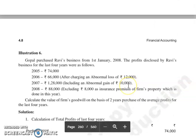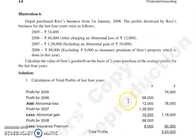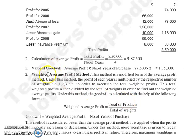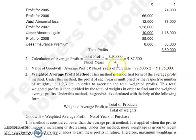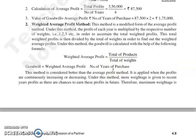Average profit is 3,50,000 divided by 4, which is 87,500. Goodwill here is 2 years of purchase. Value of goodwill is equal to average profit into number of years of purchase: 87,500 into 2 is equal to 1,75,000. That is your value of goodwill.